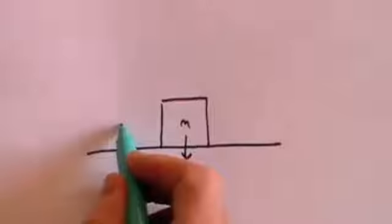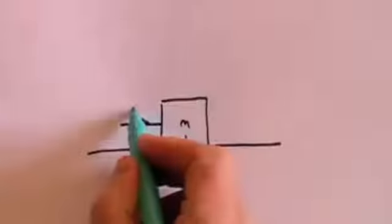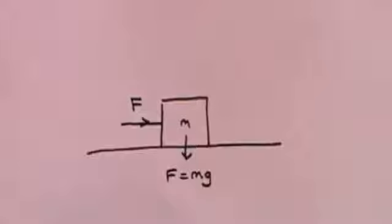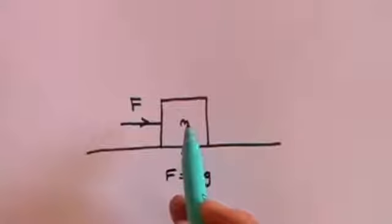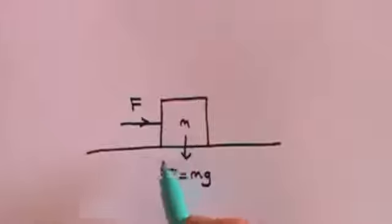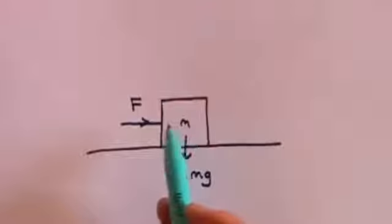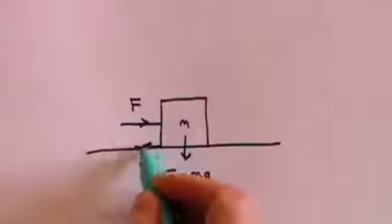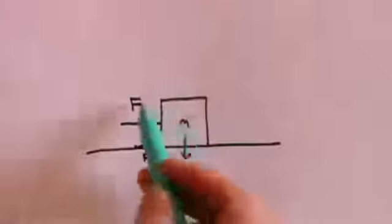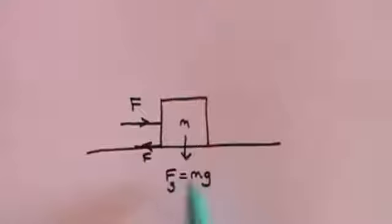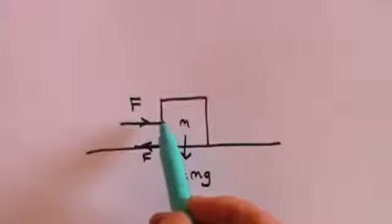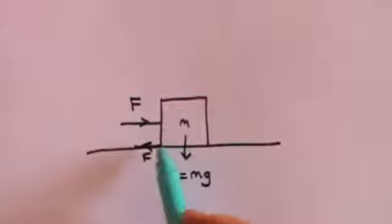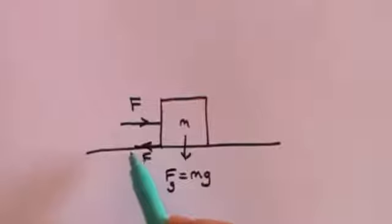If I attempt to push that bookcase with a force, it won't move. You'll have tried this — if you've got something heavy you try to push it along the ground, it doesn't move. You push a bit harder, it still doesn't move. This means there must be a force that is equal and opposite. If the bookcase doesn't move, there must be an equal and opposite force F acting in the other direction, because otherwise there would be movement.